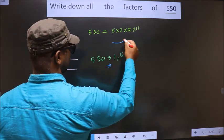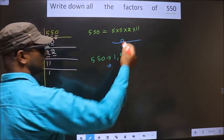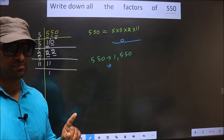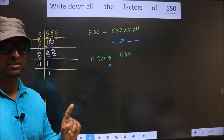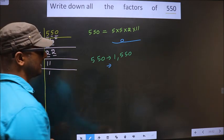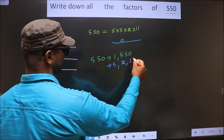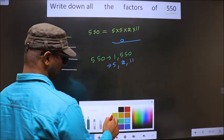Now from these numbers, you select 1 different number at a time. How many numbers do we get? We get 5, 2, and 11.